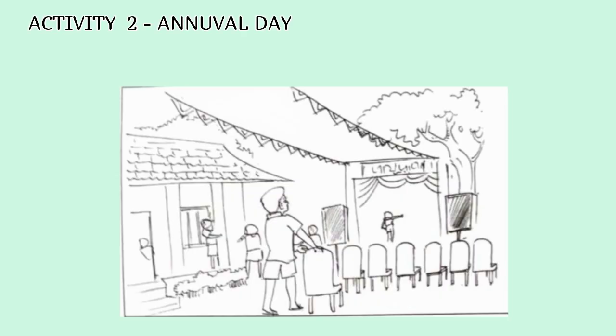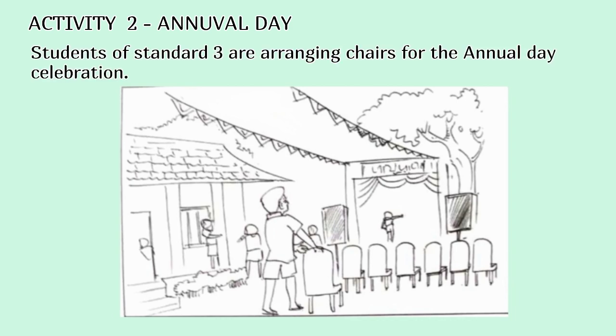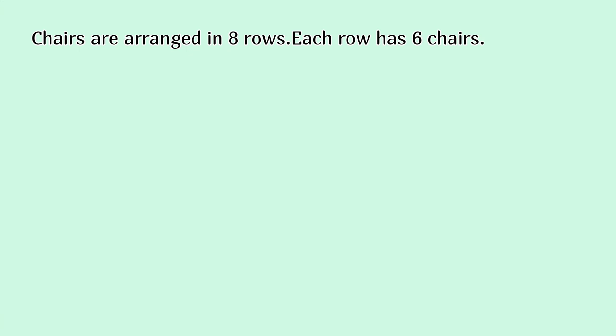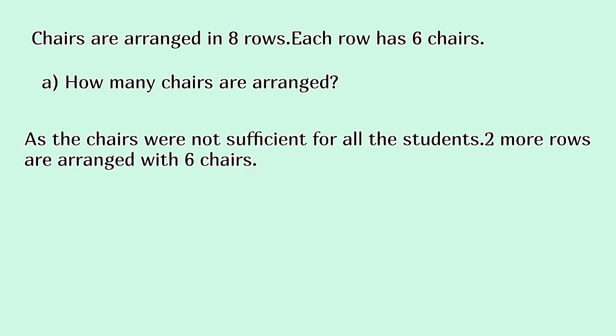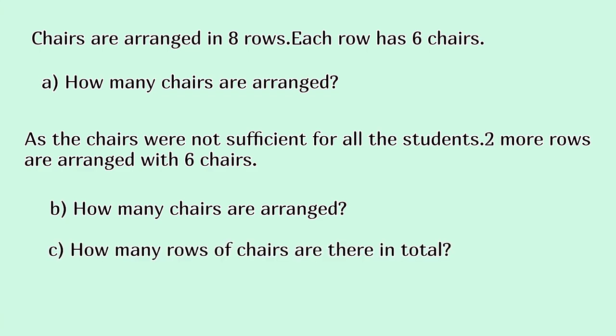Activity 2, Annual Day. Students of Standard 3 are arranging chairs for the annual day celebration. Chairs are arranged in 8 rows. Each row has 6 chairs. As the chairs were not sufficient for all the students, two more rows are arranged with 6 chairs. B. How many rows of chairs are there in total? D. Find the total number of chairs.